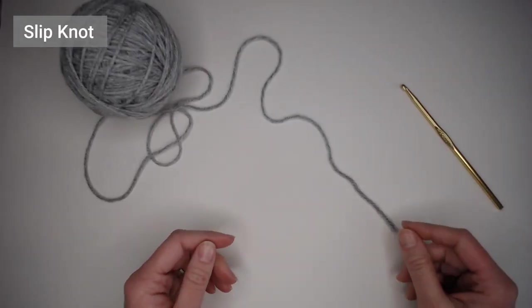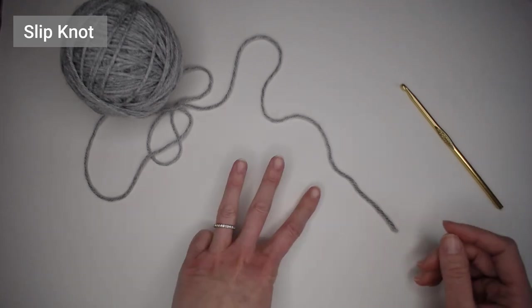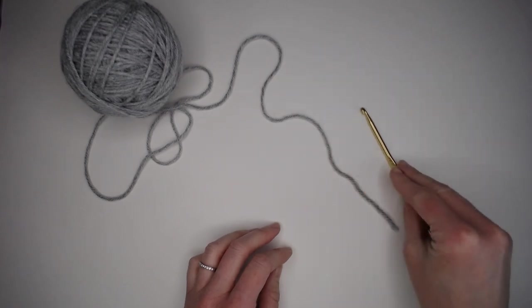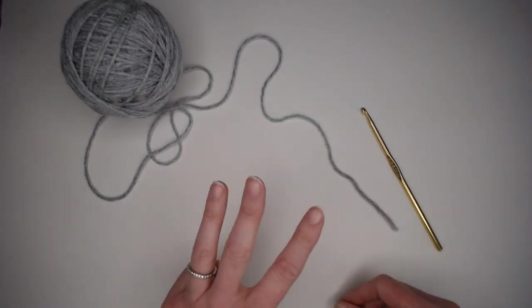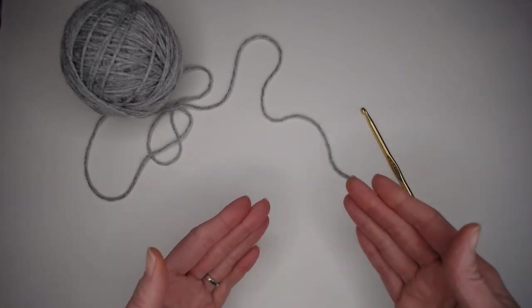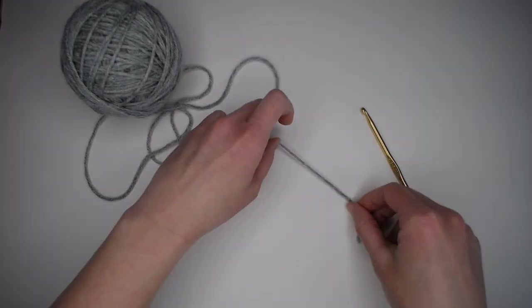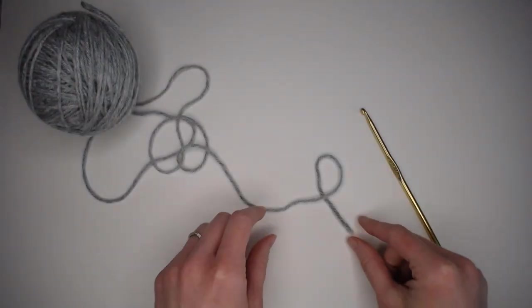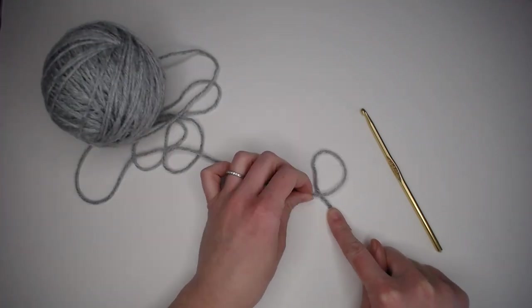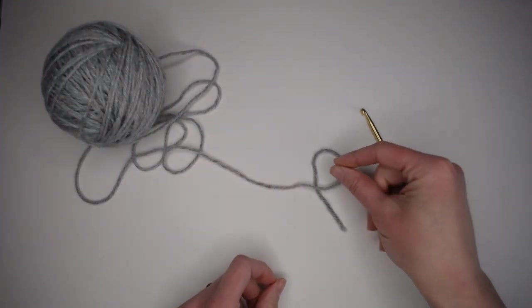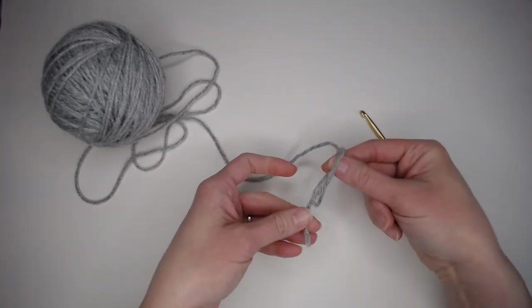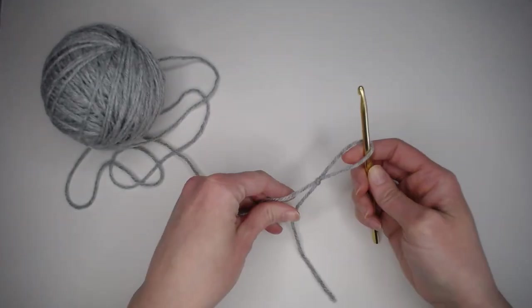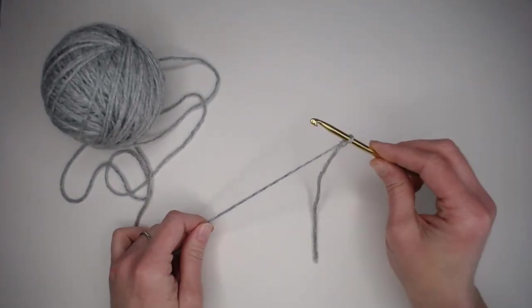You begin every project with what is known as a slipknot. I'm going to show you three different ways that you can create the slipknot with your yarn and your crochet hook. There are many other ways. I'm just going to show you three and then you can figure out which technique works best for you. The first technique is taking your yarn, making a little curly cue with the yarn that's attached to your ball of yarn, laying on top. Take your two fingers, go underneath, pinch some yarn, grab the tail, grab the yarn, pull that, and you are left with a slipknot. And you're ready to go.